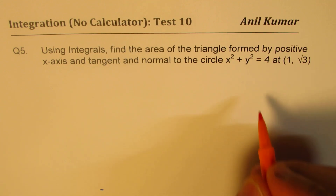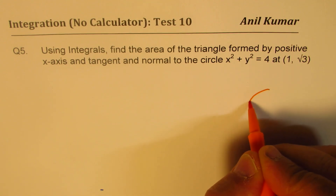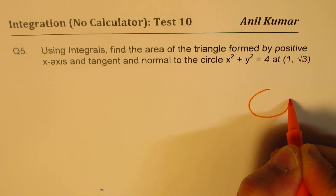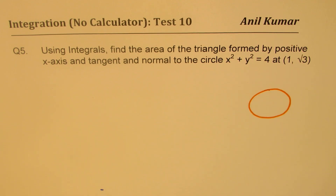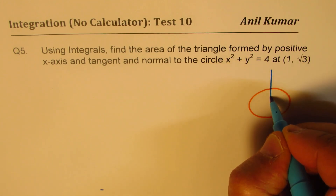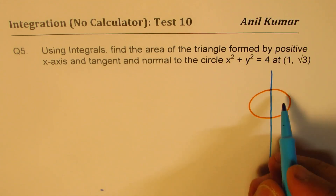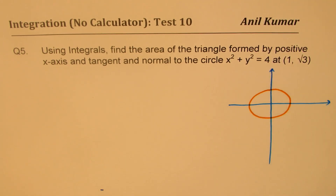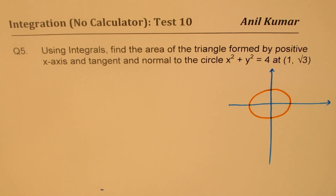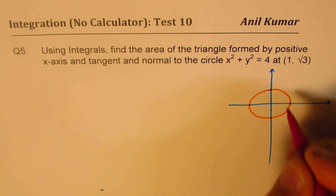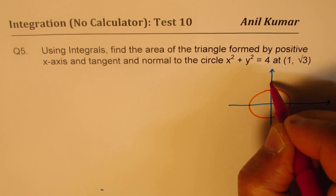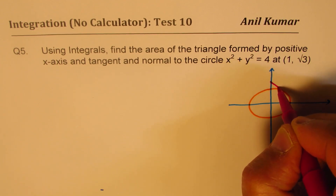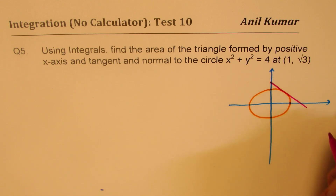Let's see the scenario first. Here is a circle whose equation is x² + y² = 4. It has a radius of 2 and the center is at the origin. At the point (1, √3), we can draw a tangent — so that becomes the tangent line.